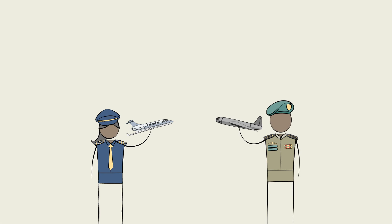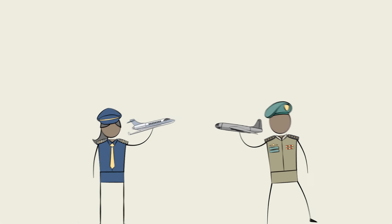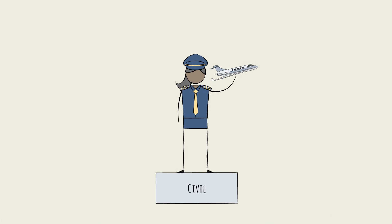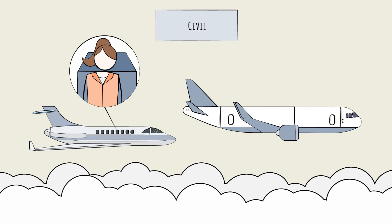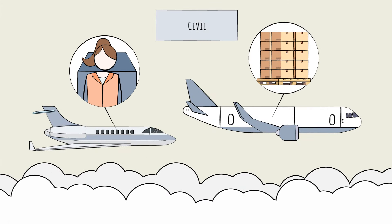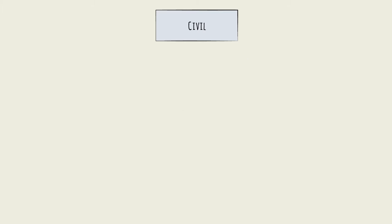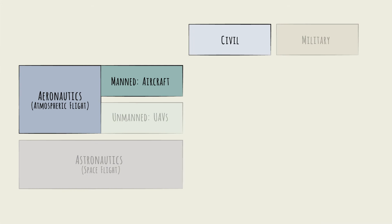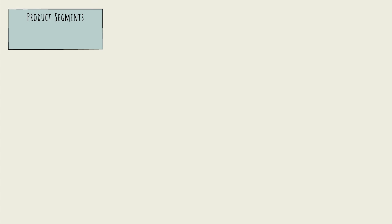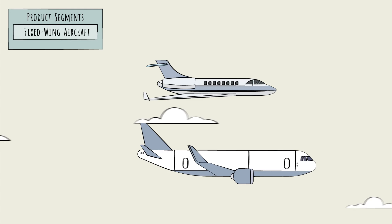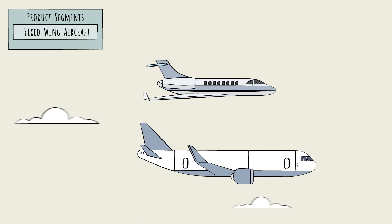Civil aircraft are those used for any non-military purpose, including commercial uses like flying passengers or cargo on scheduled flights, and private or recreational uses. In this chapter, we'll explore the different types of aircraft produced — the product segments. The largest segment, and the focus of this primer, is fixed-wing aircraft, also known as planes.